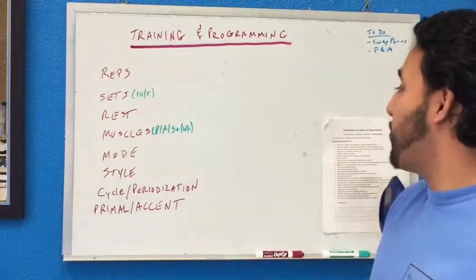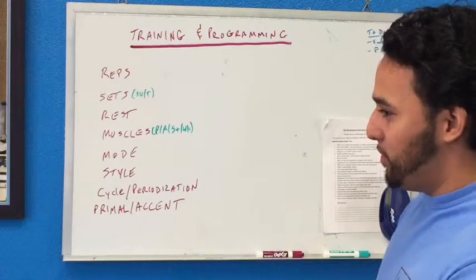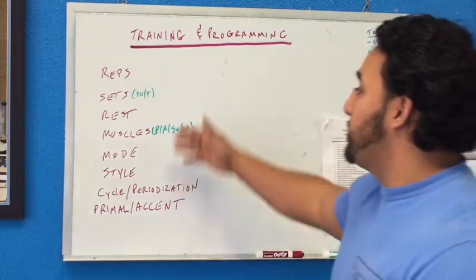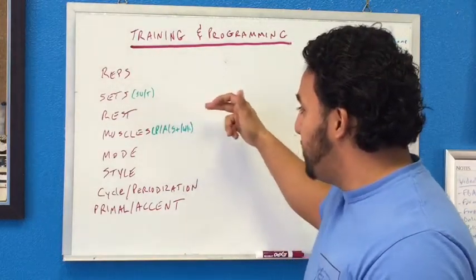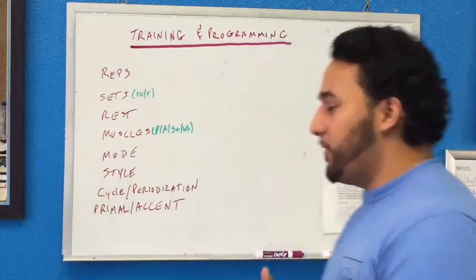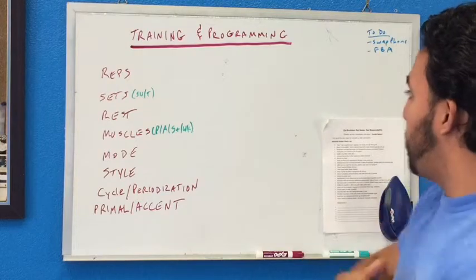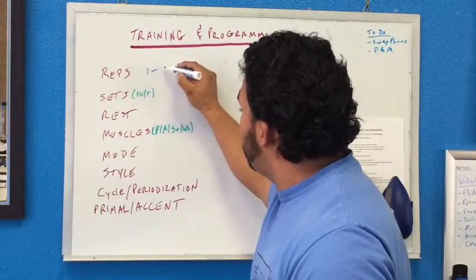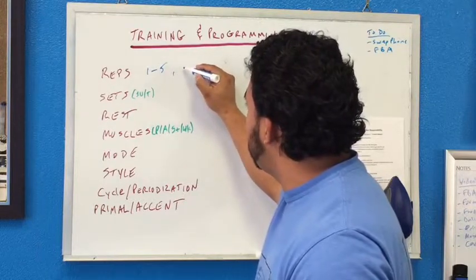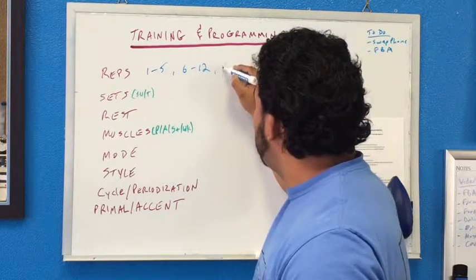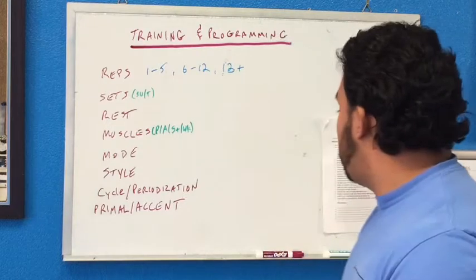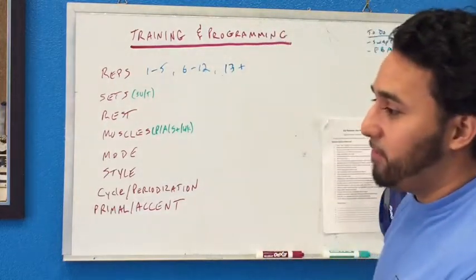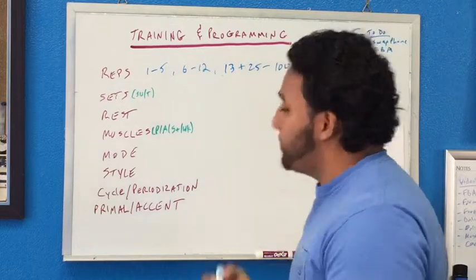Alright, so today we're going to go over training and programming. Many things happen behind the doors that clients don't know about. You have to program it based on how long you have that client and their goals. Different things to consider — I have a list of things we're going to go through: reps, sets, rest, muscles, mode, style, cycle periodization, primal, and accent.